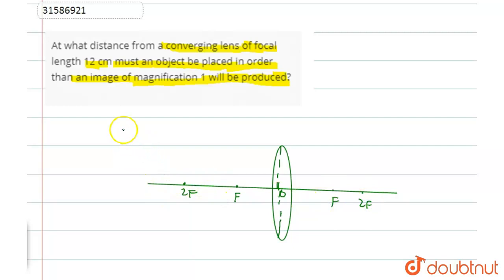If you want to see the magnification 1, it means magnification value V upon U is equal to 1. This is the distance of object we will place. Where will we place? Radius of curvature or 2F.